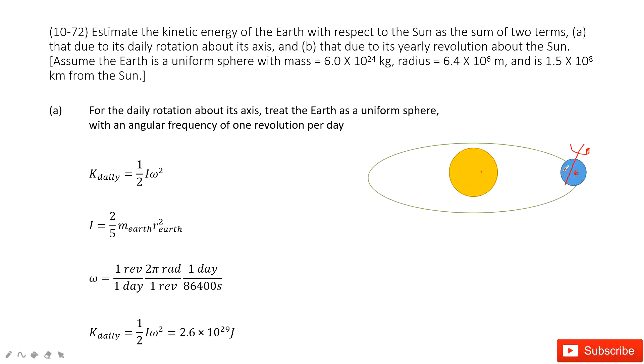And the I, moment of inertia for a sphere—you can check your textbook. And omega, angular velocity, is one revolution per day. So we must convert the unit to radians per second.